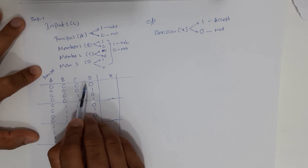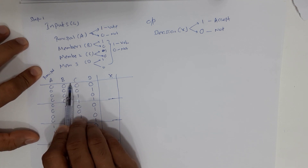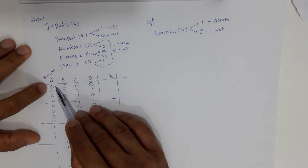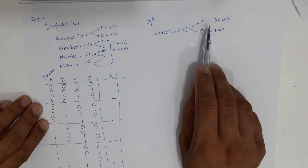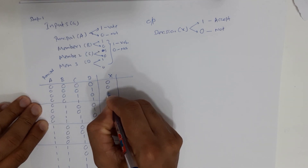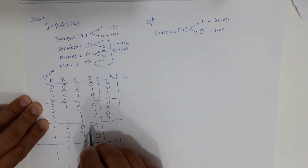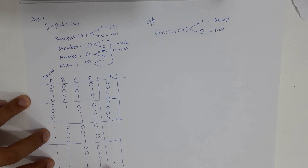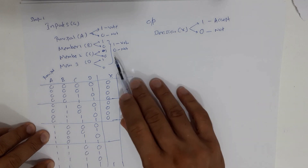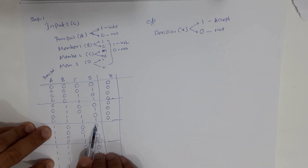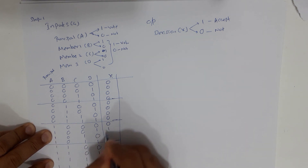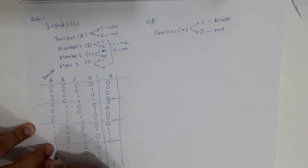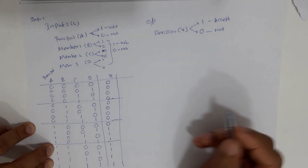The first bullet means the principal and at least one other member must vote. Looking at the 16 rows, the first 8 have the principal not voting — so the decision can never be accepted, meaning output is 0 for all those. For the next 8 rows the principal is voting. Principal alone with no other member gives output 0; principal with any other member gives output 1. So all remaining combinations are 1s, completing the truth table.